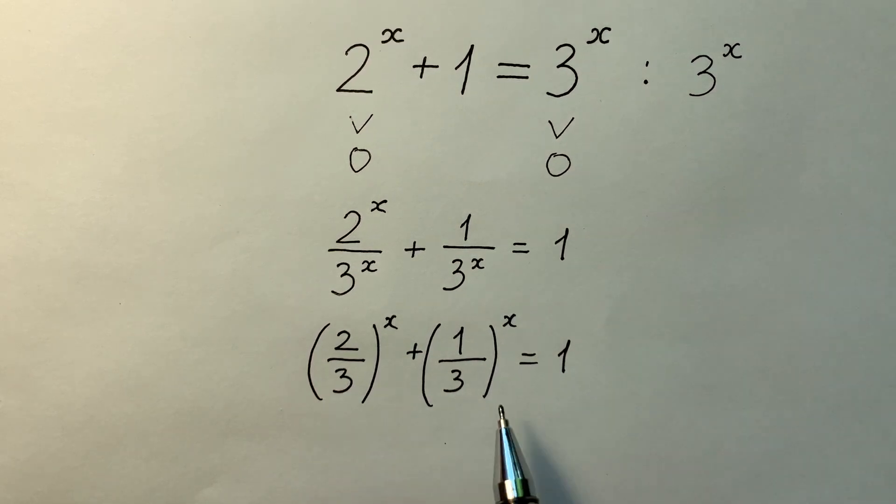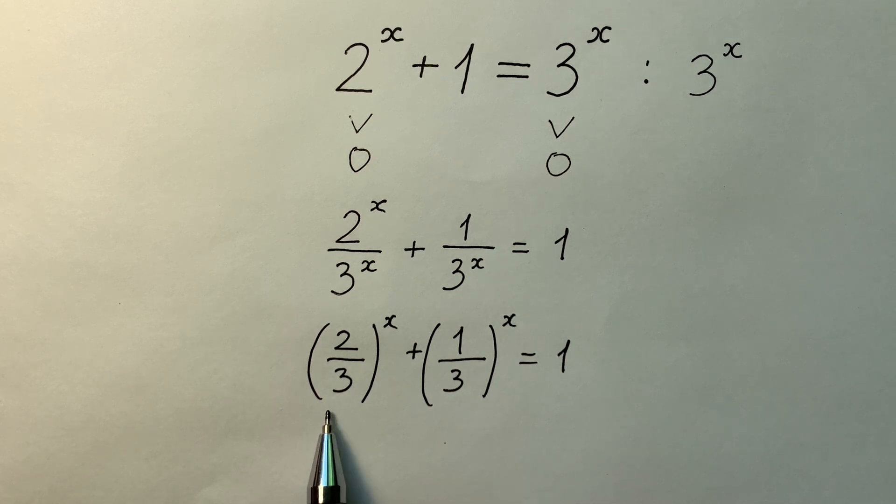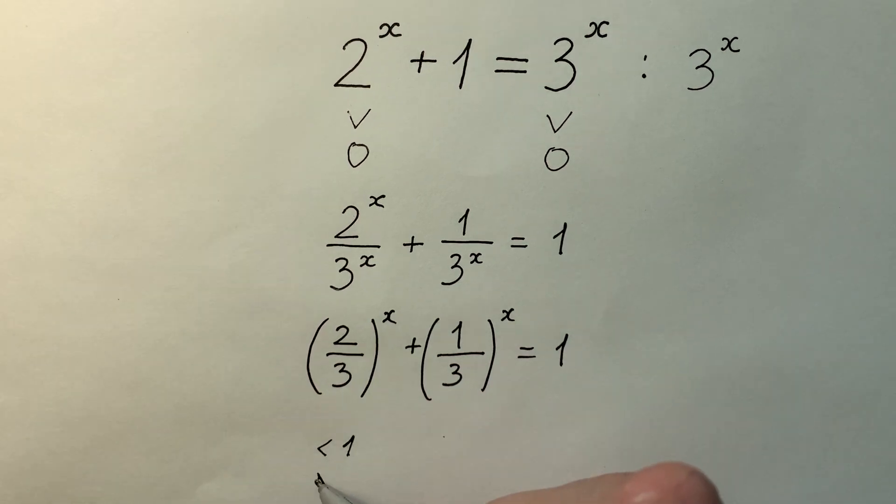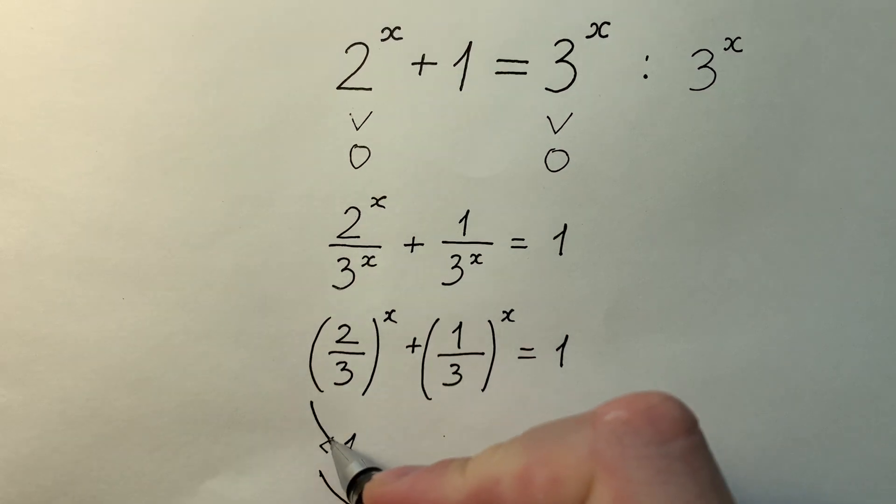Now look at these two exponential functions. The first exponential function (2/3)^x is an exponential function with the base less than 1. It means that this exponential function is decreasing.